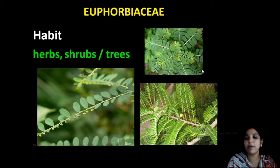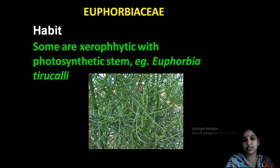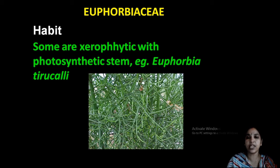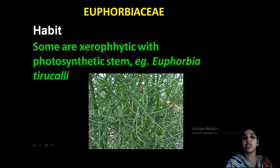These are some common plants. You know gooseberry — nellika. This is Phyllanthus niruri — a herb. Habit may be xerophytic. Xerophytic adaptations can be seen — the stem is photosynthetic. Leaves are highly reduced or absent. This plant is Euphorbia tirucalli, a common plant in our area.